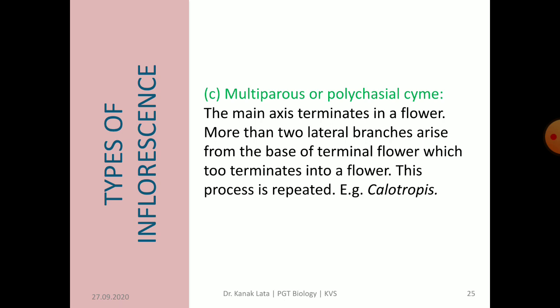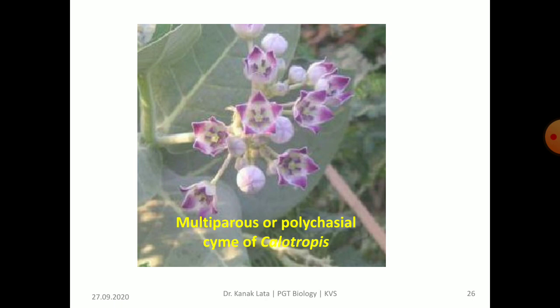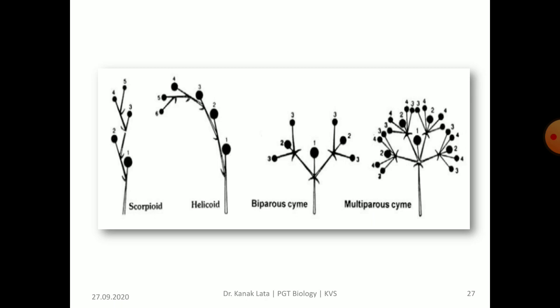Another cymose inflorescence is multiparous or polychasial cyme. In this case, the main axis terminates into a flower and more than two lateral branches arise from the base of the terminal flower. Again this process is repeated, and it is seen in Calotropis. In the given figure, you can observe the multiparous cyme of Calotropis and compare all types of cymose inflorescence — monochasial cyme having scorpioid and helicoid, dichasial or biparous cyme, and multiparous or polychasial cyme.